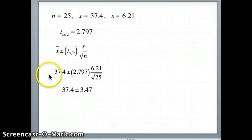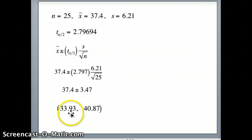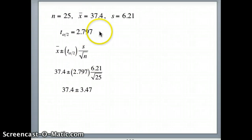So plugging in everything, x-bar 37.4 plus or minus t alpha by 2, 2.797, s 6.21 over root n over root 25. We get 37.4 plus or minus 3.47, which is going to give us 33.93 to 40.87 as our confidence interval. Just cleaned it up. I had a few more decimals for t alpha by 2 up here, but I want to make sure I have the same thing you have. So we got our confidence interval of 33.93 to 40.87.